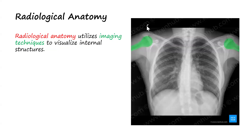The next branch is radiological anatomy. Radiological anatomy is associated with utilizing imaging techniques to visualize internal structures. We apply knowledge of imaging techniques to visualize our internal structures — for example, you can use X-ray or imaging techniques to visualize the structure of our ribs to see if there is any breakage or not.